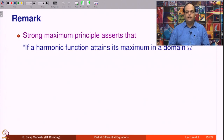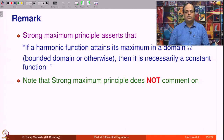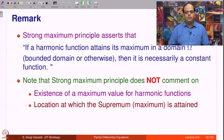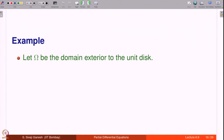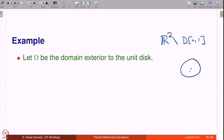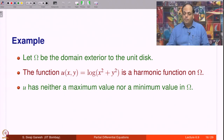In this course we will not go beyond the Laplace equation. The strong maximum principle asserts that if a harmonic function attains its maximum in a domain omega (bounded or otherwise), then it is necessarily a constant function. Note that the strong maximum principle does not comment on the existence of a maximum value, nor on the location at which the supremum is attained. As an example, let omega be the domain exterior to the unit disk, i.e., R² minus the unit disk. The function u(x,y) = log(x² + y²) is harmonic on omega, and u has neither a maximum nor a minimum value in omega.